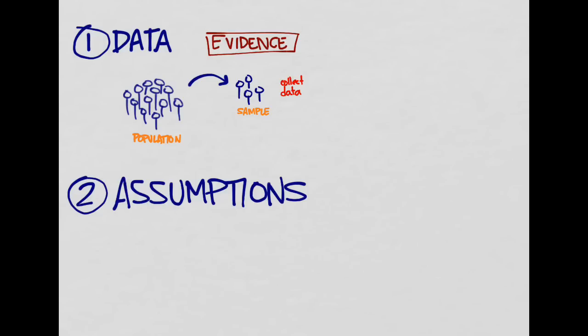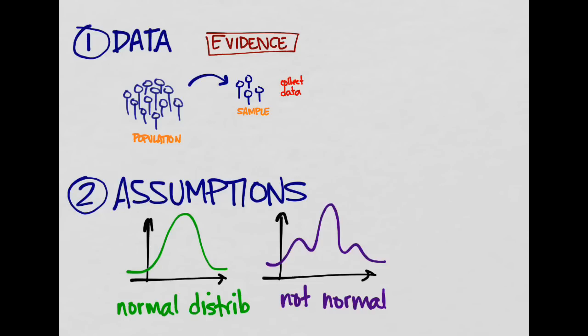In step two, we've got to make some assumptions, and our assumptions are really based on our data. We want to know: is our data normally distributed or not? We also want to know whether we know the standard deviation or not. This is important because it's going to help us differentiate whether we need to use z-scores or t-scores.